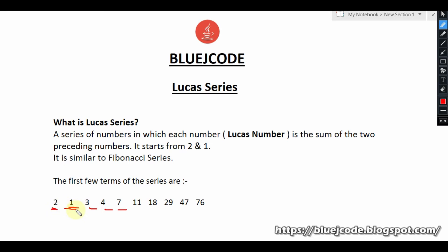Our first two terms are 2 and 1, compared to Fibonacci which starts at 0 and 1. The other concept is the same — we add two terms together. So 2 plus 1 is 3, then 3 plus 1 is 4, then 4 plus 3 is 7, 7 plus 4 is 11, and so on. This is how we calculate our Lucas series.